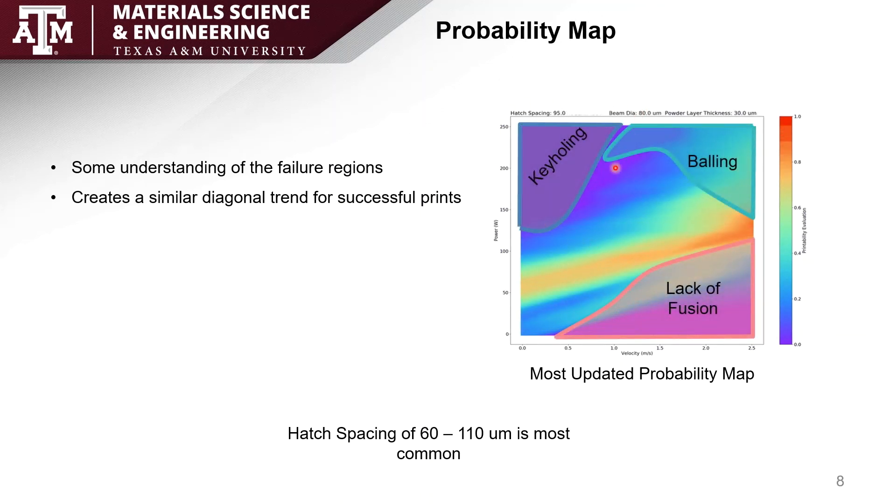You can see the three failure regions here: keyholing, balling, and lack of fusion. Keyholing and balling are for the most part empty with a little bit of an exception here, and lack of fusion is really good because we see a diagonal trend that follows a hypotenuse of the lack of fusion area. This is really good because this shows us that the model is understanding what is printable and what's not printable based on the understanding of these regions.